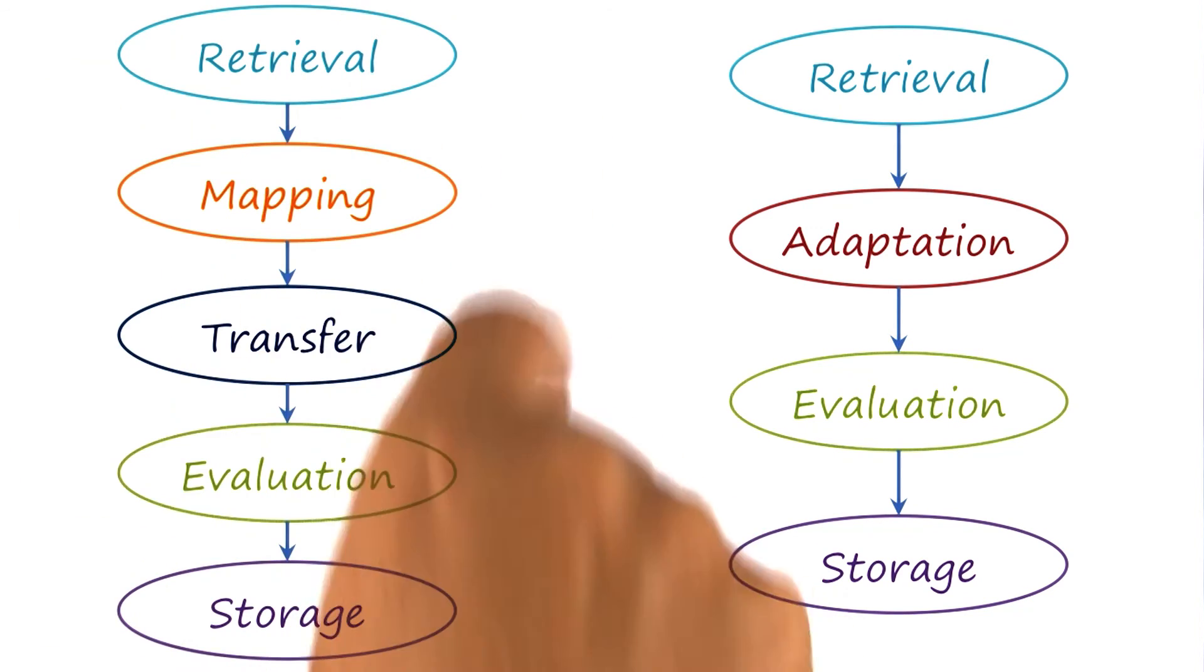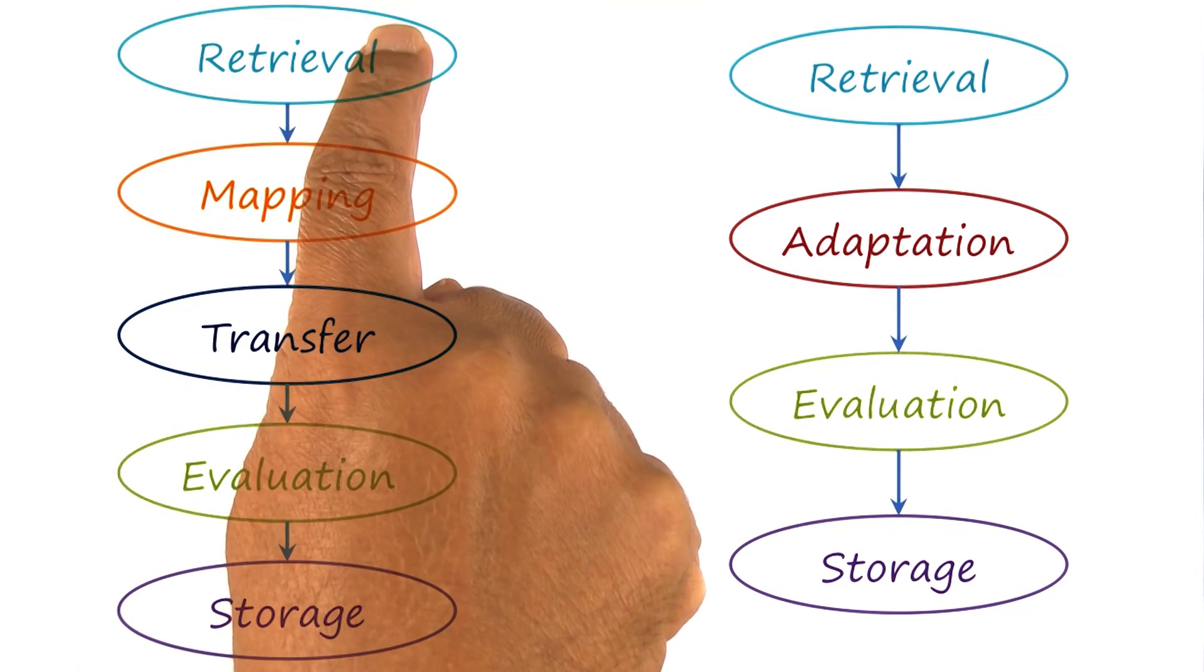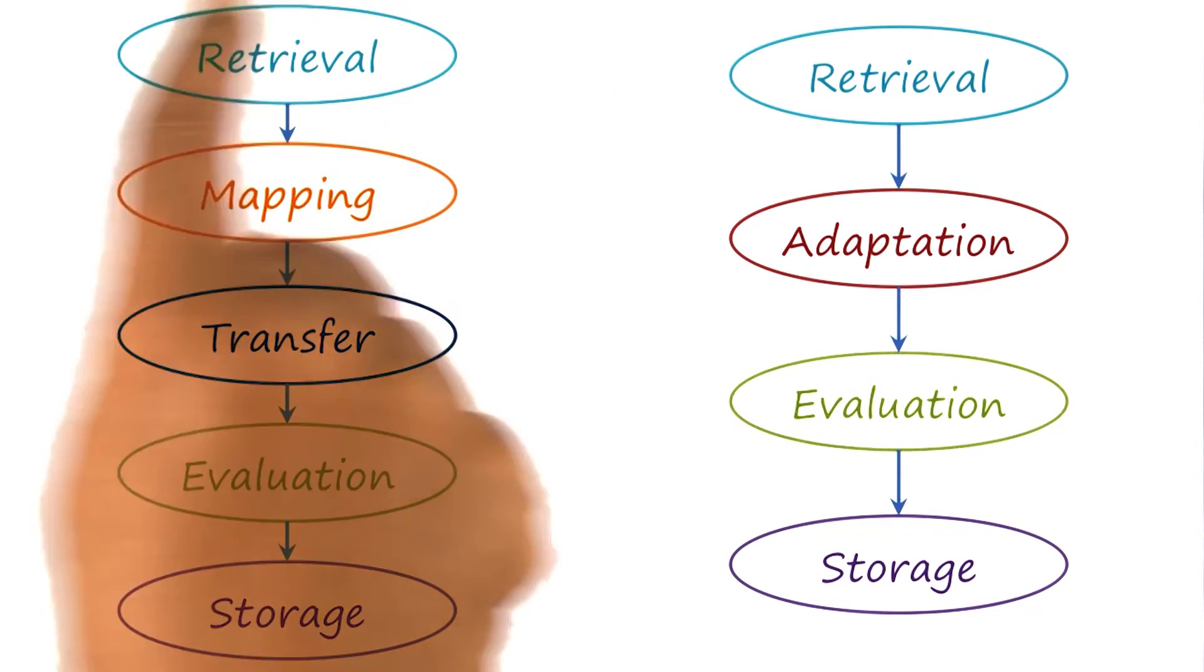Note that this is just one theory of analogical reasoning. In other theories, some of these boxes are configured differently. For example, in another theory, mapping is a part of retrieval. You do mapping in order to do retrieval.